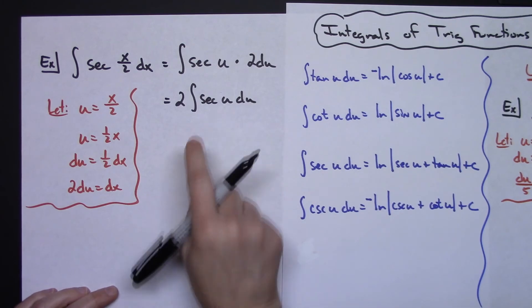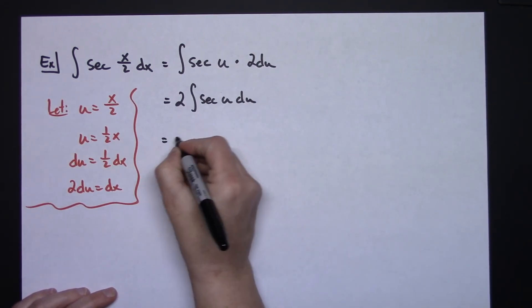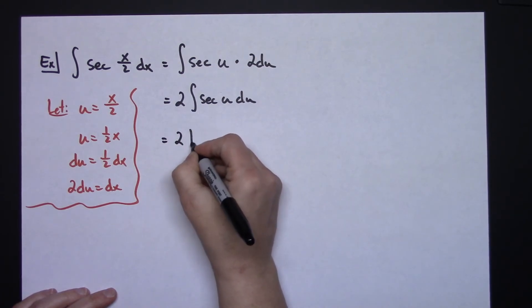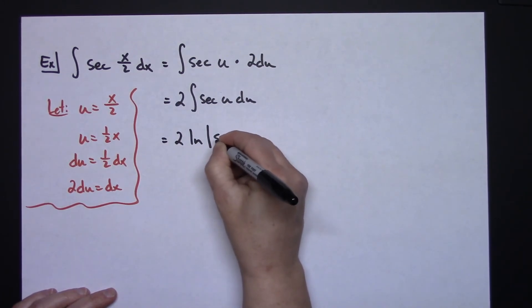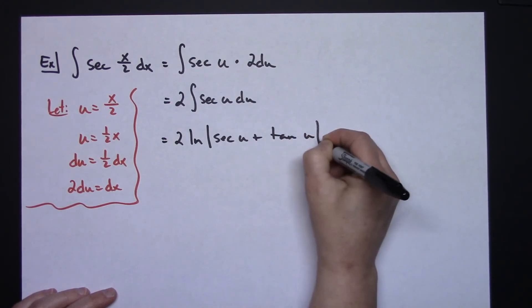So I am ready to integrate this. 2 times the natural log secant u plus tangent u plus c.